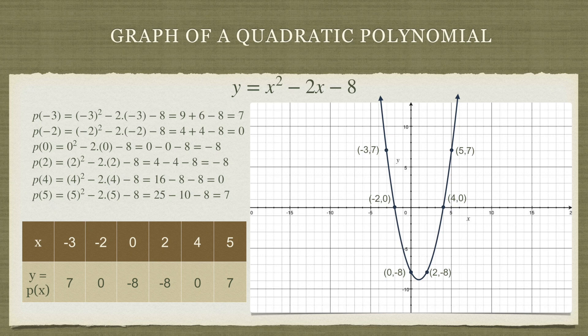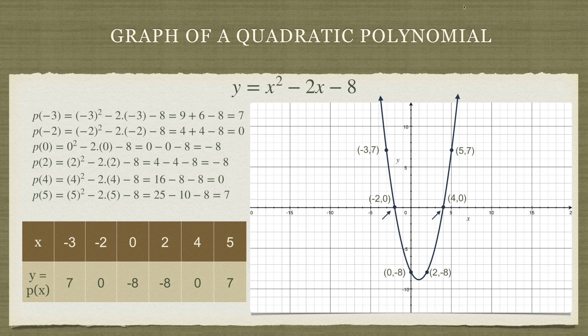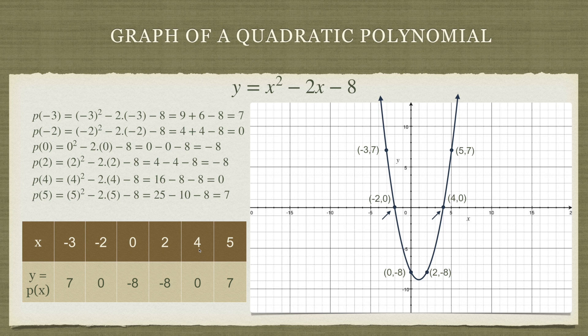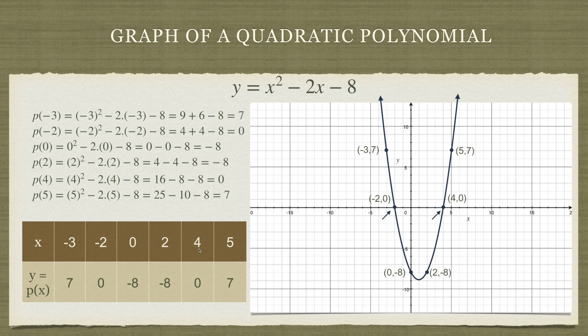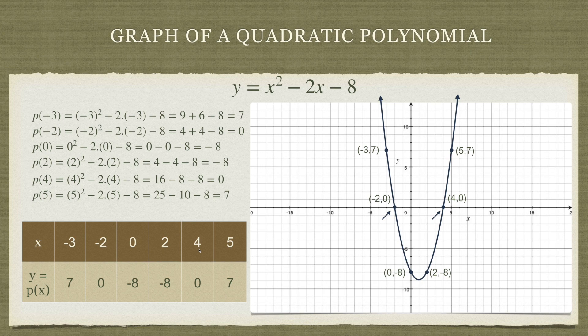Now look at these two points shown by arrow here. These points are special. What are the x coordinates for each of these points? Here the x coordinate is minus 2. For x equals minus 2 what is the value of the polynomial? It's zero. So we can say minus 2 is a zero of the polynomial. Similarly here the x coordinate is 4. So for x equals 4 the value of the polynomial is zero. So we can say that 4 is also a zero of this quadratic polynomial. What we are seeing here is that we have two zeros of this particular quadratic polynomial and those zeros are the points where the parabola cuts the x axis, or the x coordinates of those points where the parabola cuts the x axis give us the zero of the polynomial.